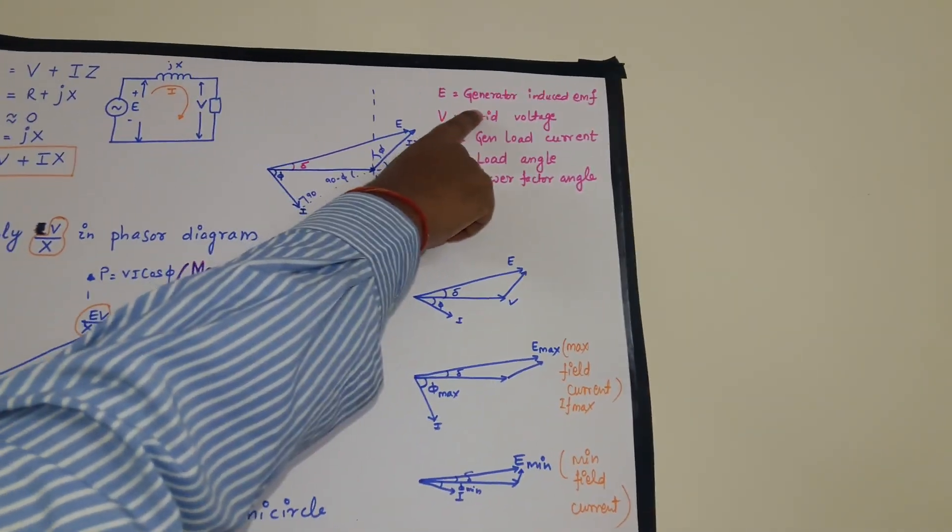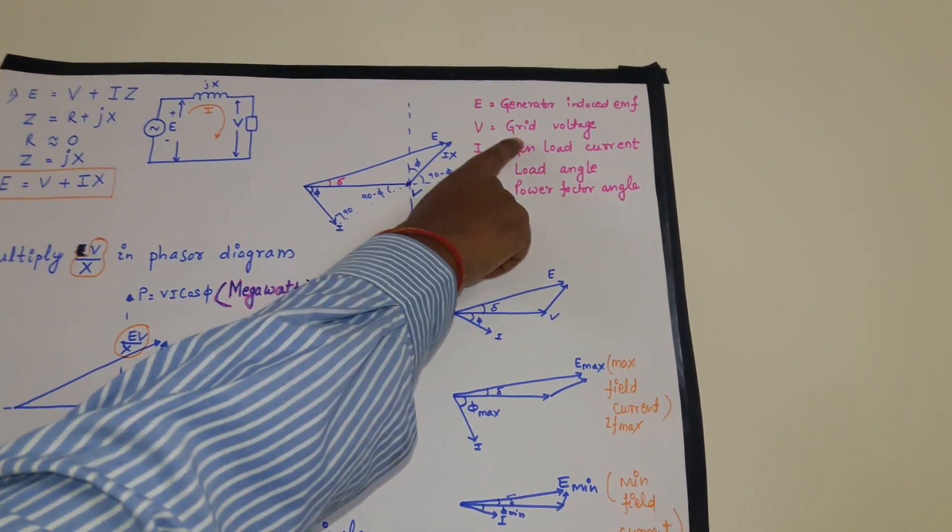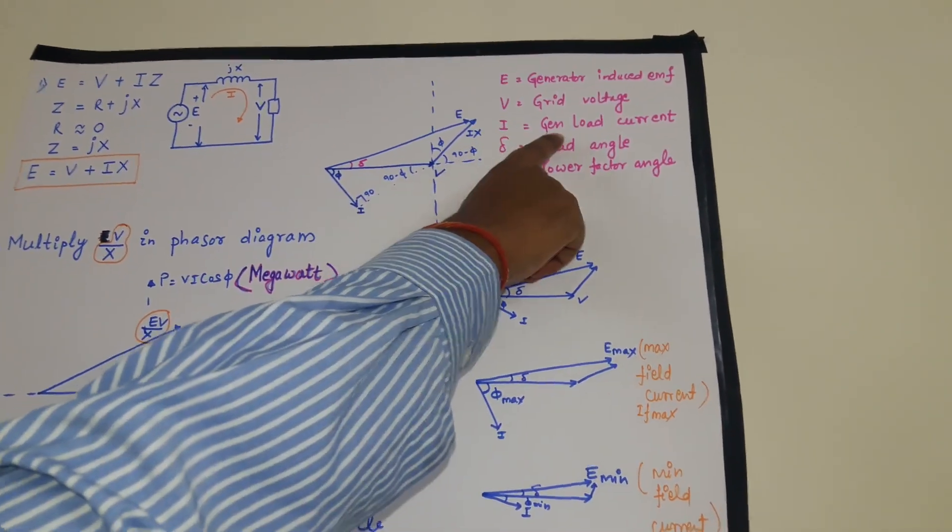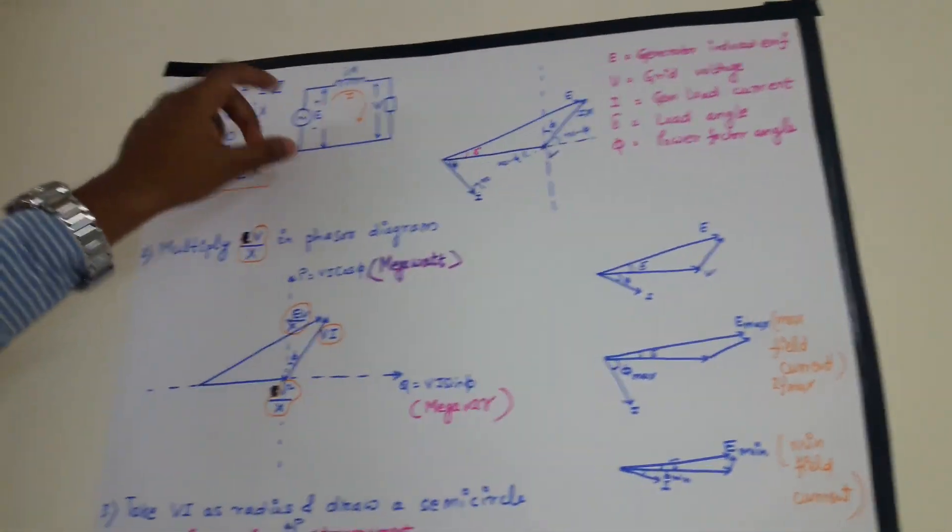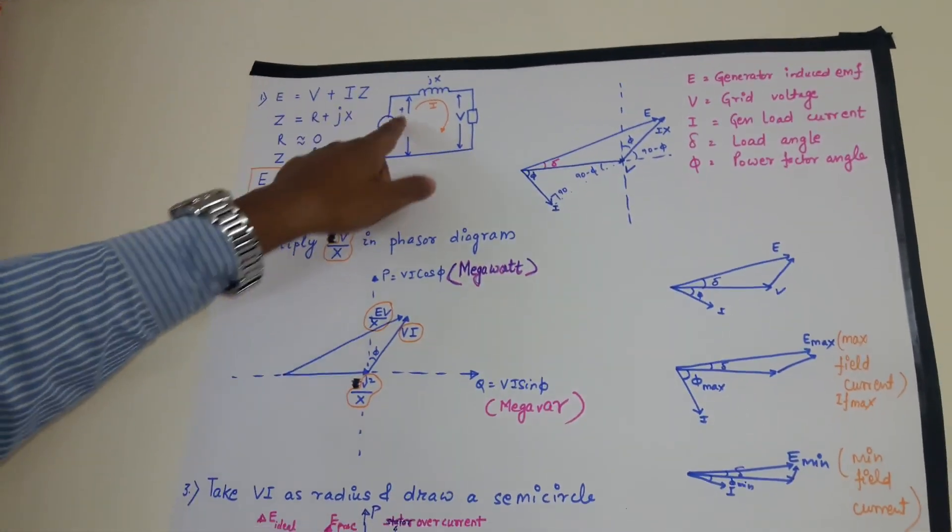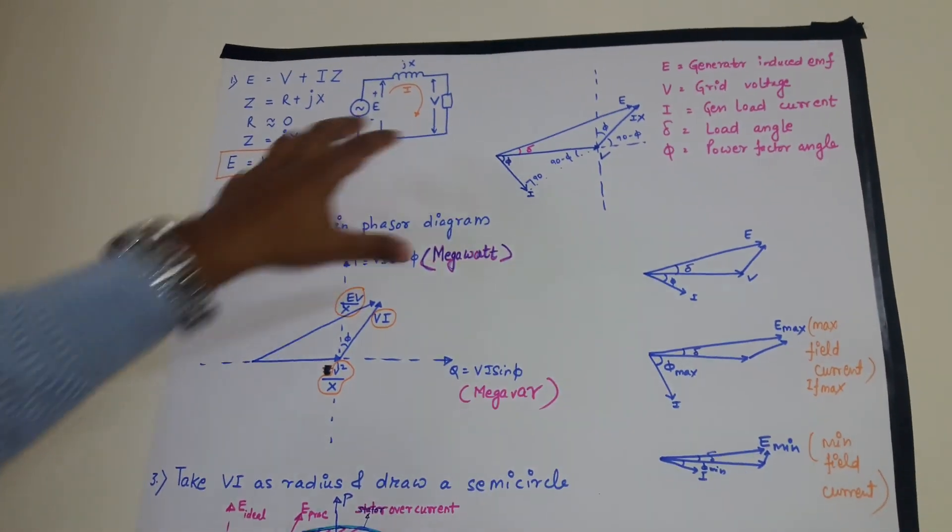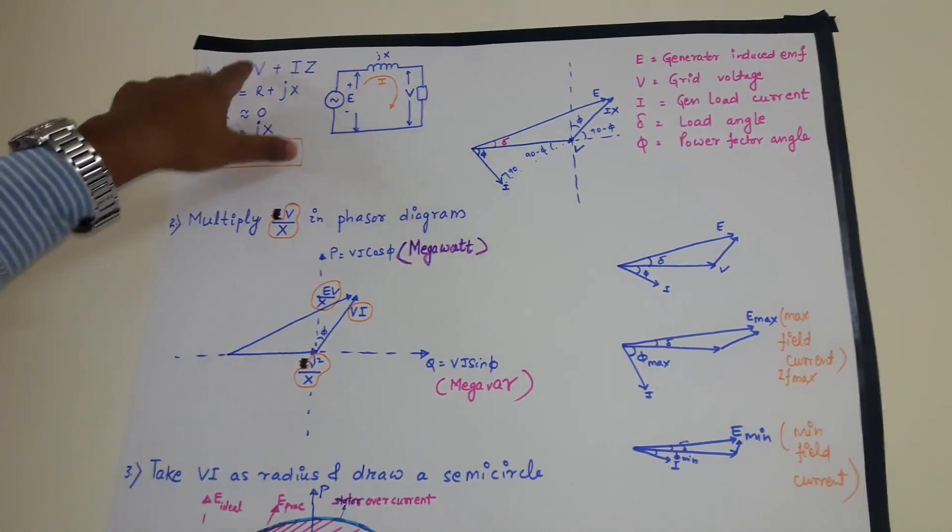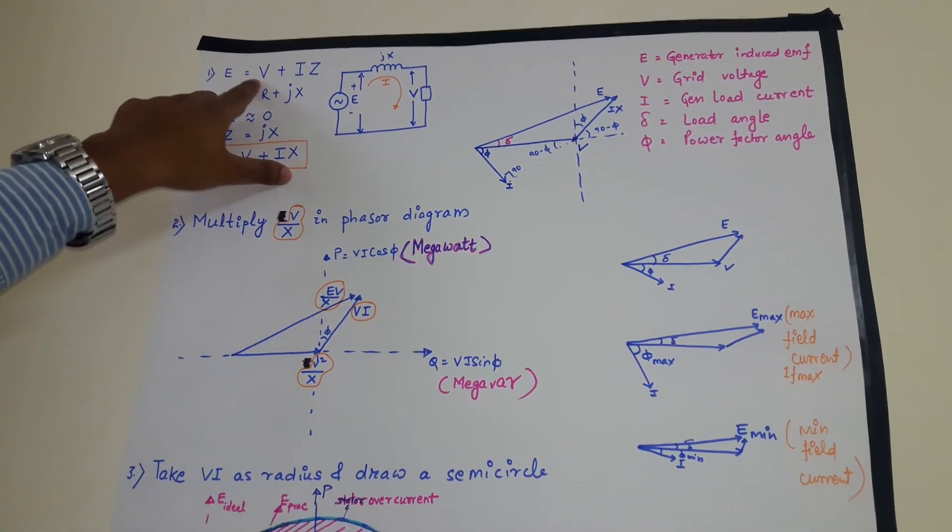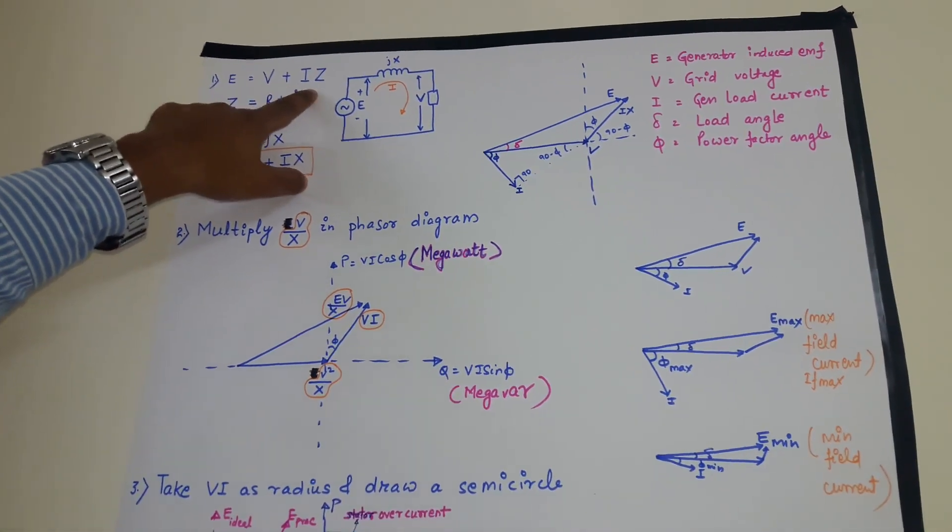E is equal to generator induced EMF. V equals to grid voltage. I is generator load current. So for an instant if this is plus, this is minus, so the current is flowing in this direction. So I can write this diagram in terms of this equation: E is equal to V plus IZ.